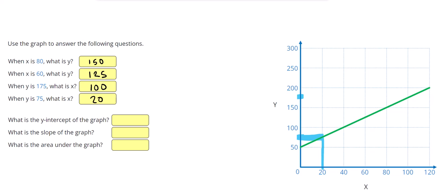All right, so then it asks us, what is the y-intercept of the graph? So the y-intercept is just where the graph intercepts the y-axis. So that's occurring at y equals 50.